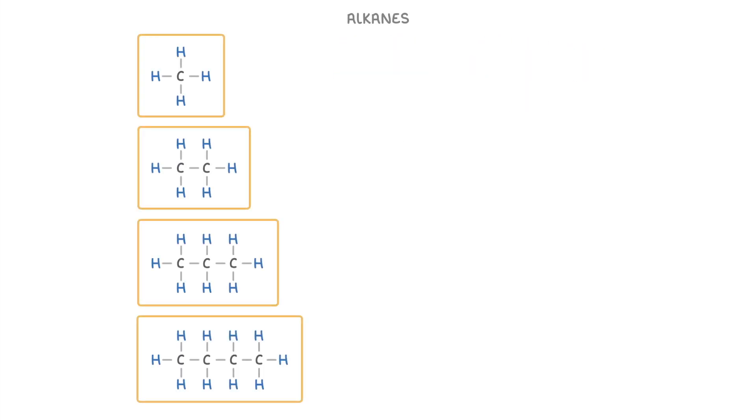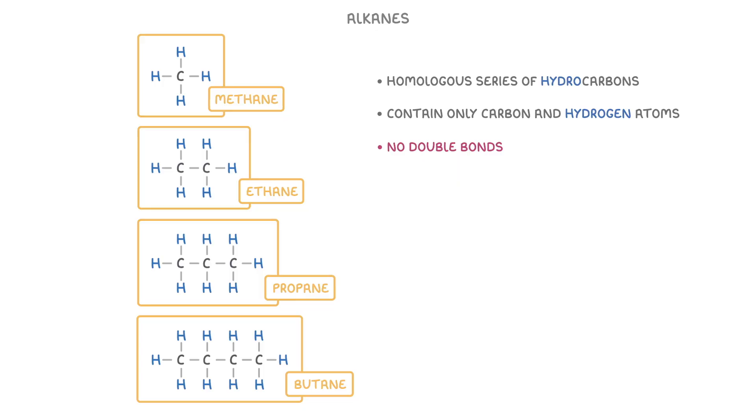We saw in the last video that alkanes are a homologous series of hydrocarbons that contain only carbons and hydrogen atoms, with no double bonds, and we covered the names of the first four alkanes in the series.